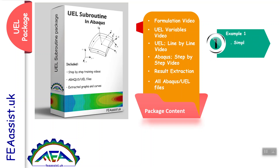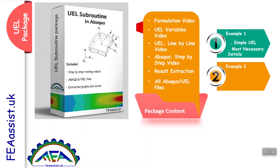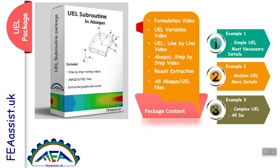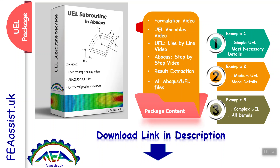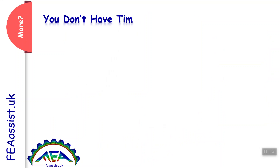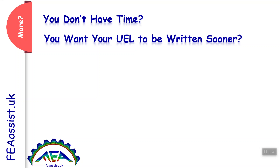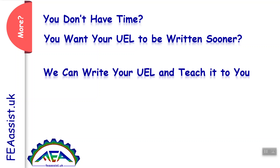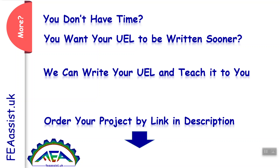This package includes three examples: Example one is a simple UEL where most necessary details like RHS and A-matrix are explained. Example two is a medium UEL with more details. Example three is a complex UEL where all details are explained in a systematic way. You can download this package by the link in description or go directly to feassist.uk. We can also write your UEL, test it with published results, and teach it to you by online meetings and videos. Order your project by the link or at feassist.uk.